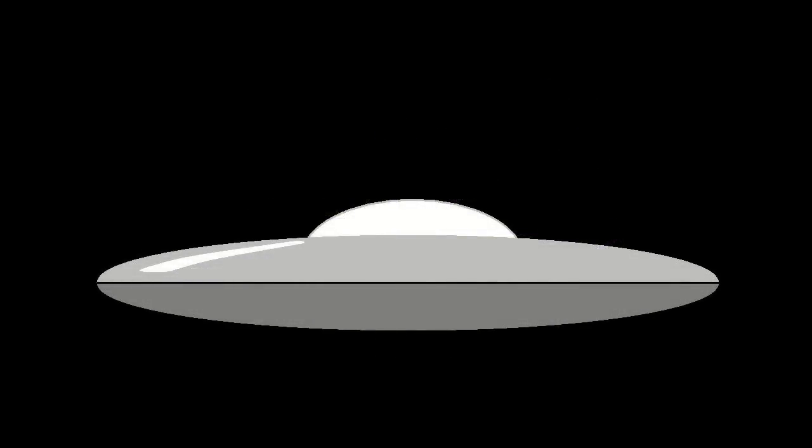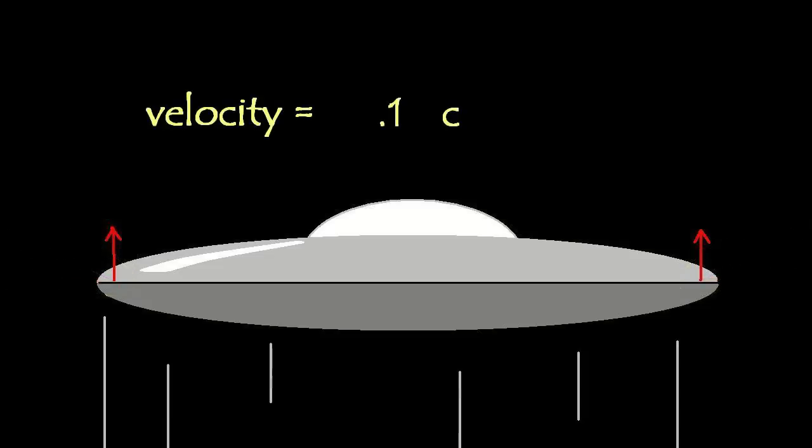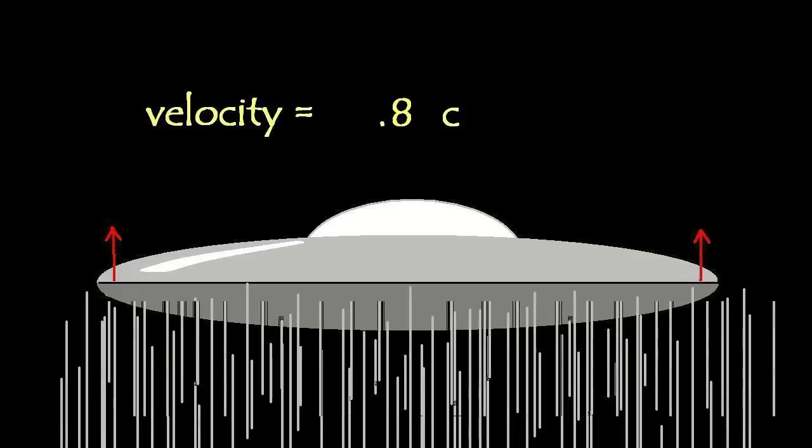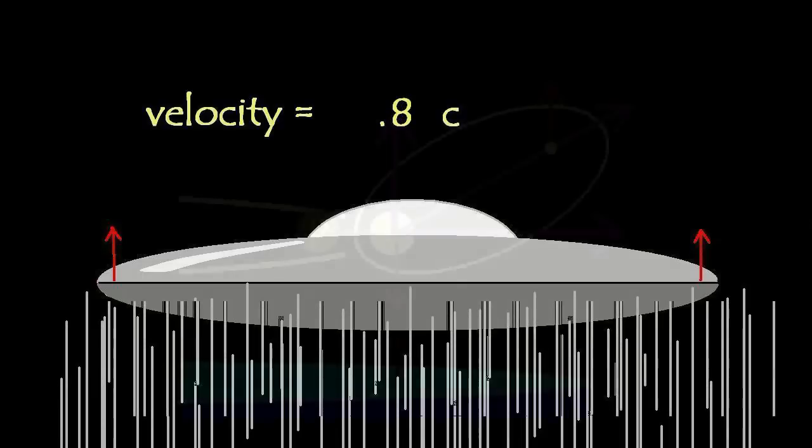It would not be necessary to push off on expelled matter to move forward. Our craft would gain kinetic energy proportional to the square of the velocity, while inputting only a constant energy. We are no longer restricted by Tsiolkovsky's rocket equation. We get unlimited energy for a finite energy input, which is to say, something for nothing.